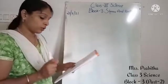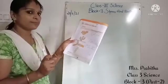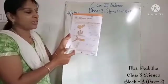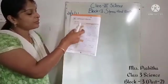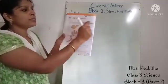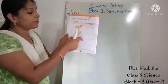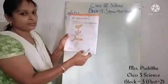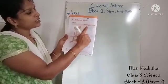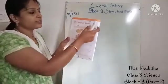Everybody take your workbook, page number 20. What is the name of the lesson? Different Stems. So what do we have to do in this worksheet? We can see some pictures here, and we have to complete this table. According to the picture, we have to complete it. The two questions are: what is the function of this stem, and why do you think that?